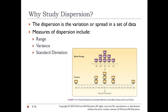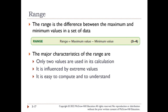Let's start with the easiest one: range. The range is the difference between the maximum and minimum values in a set of data — maximum minus minimum. Only two values are used in the calculation, and it is influenced by extreme values. A large range tells us the mean doesn't represent the data well; a small range suggests the mean is more representative. It is easy to compute and understand.